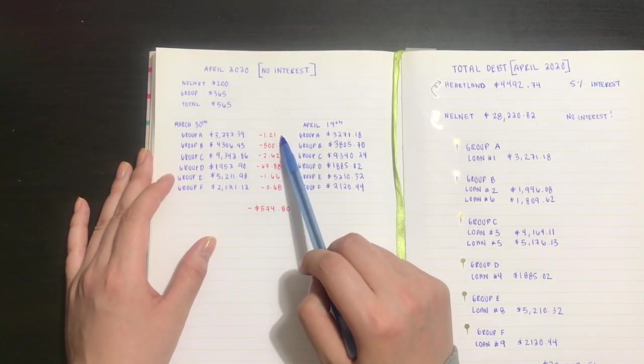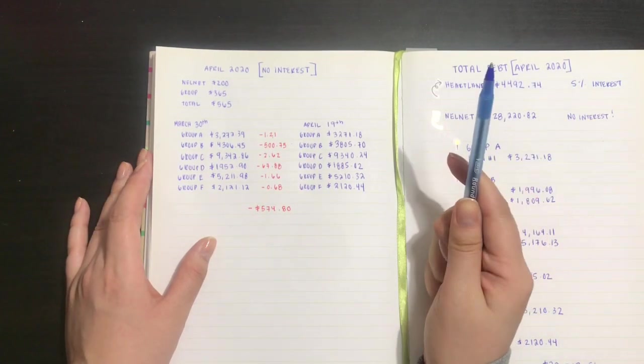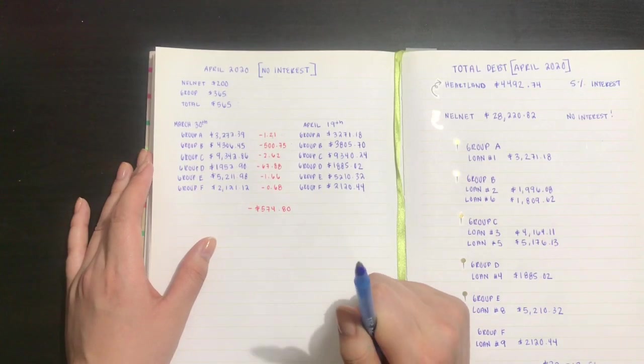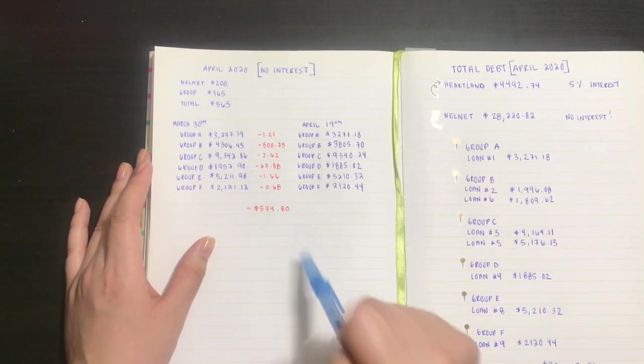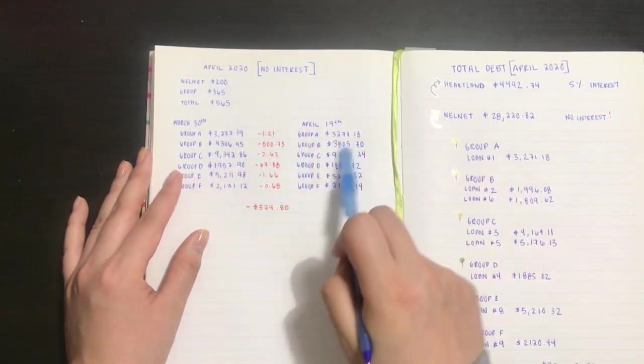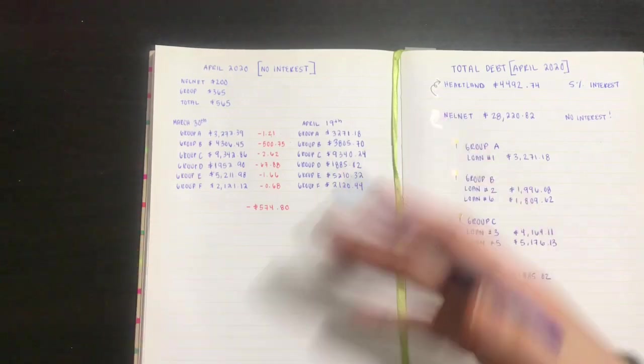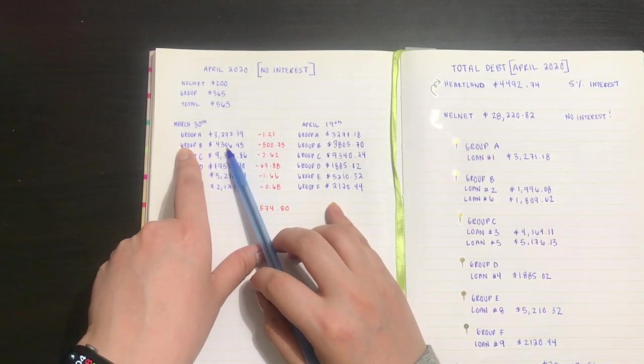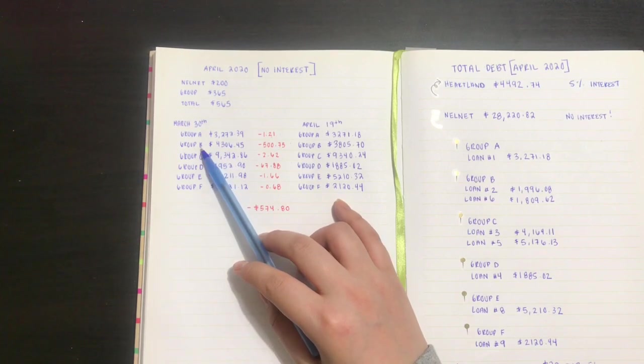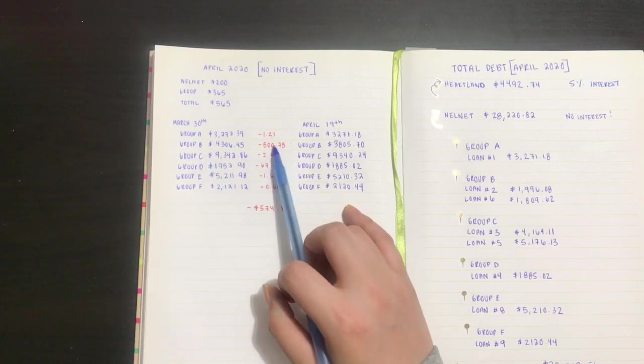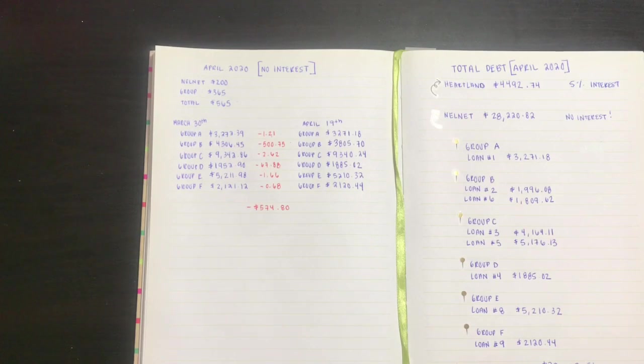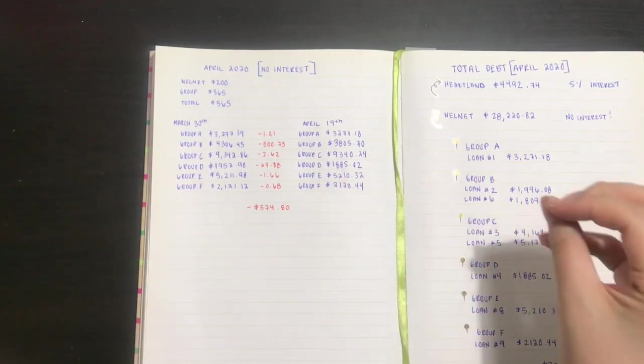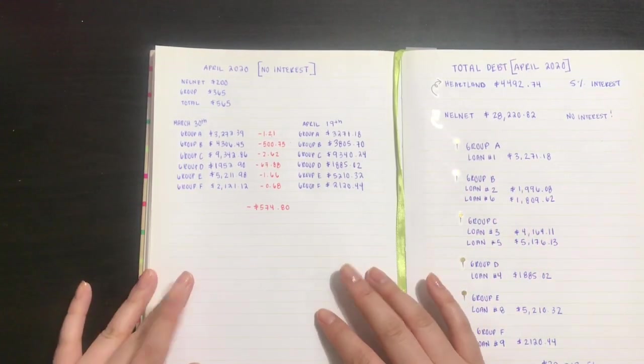All right guys, well this is it for this video. I'm definitely going to be doing this every month to see how much my groups decrease by, to see where my payment goes. I know for a fact that group B should have taken a chunk because I paid group B, I gave $365 directly to group B online.